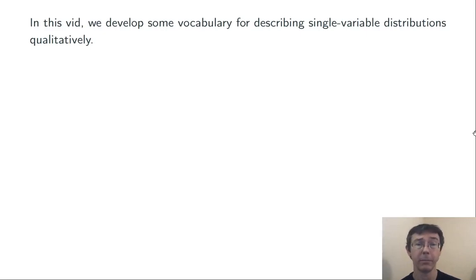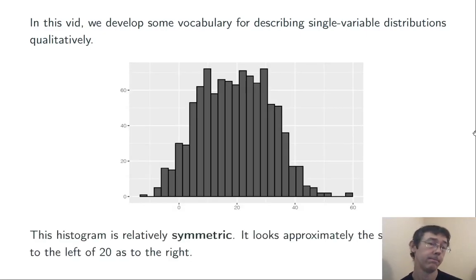Let's just run through some examples. Let's look at some histograms, frequency polygons, and stem plots, and talk about what they look like. Here's our first example. It's a histogram.